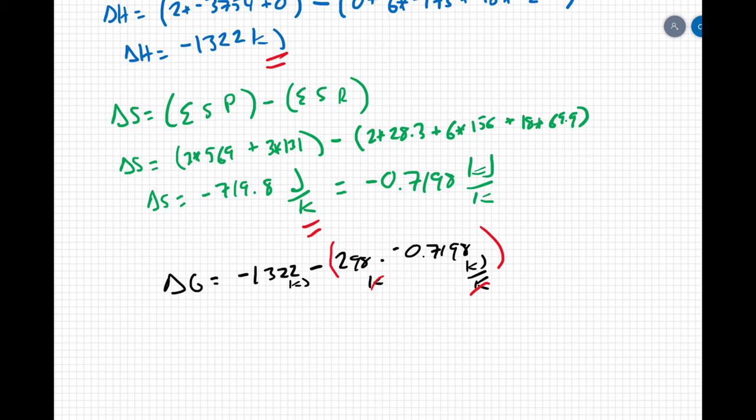So when all is said and done I'm getting a delta G equal to negative 1107 kilojoules. If I wanted to limit this to three sig figs I would say negative 1110 kilojoules for my delta G value.